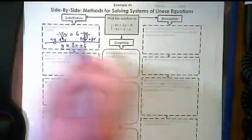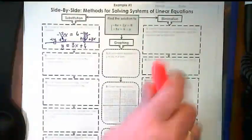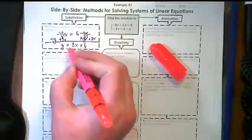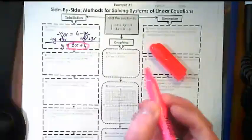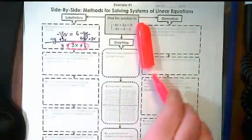Okay, now I've got that this y is equal to 3x plus 6, so I'm going to substitute this in for y with the other equation.